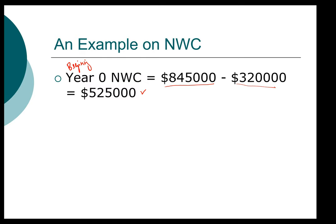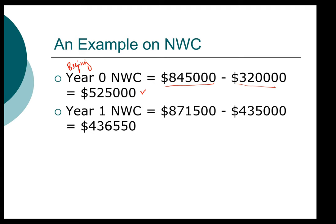I'm going to ask you to pause the video now and go ahead and compute the ending net working capital on your own. Welcome back. Did you get $436,000 — or specifically, did you get the correct ending net working capital? If you did, great — congratulations! If not, pause the video again, go back and look at the balance sheet, and see what mistakes you may have made. Did you get the correct current assets? Did you get the correct current liabilities?